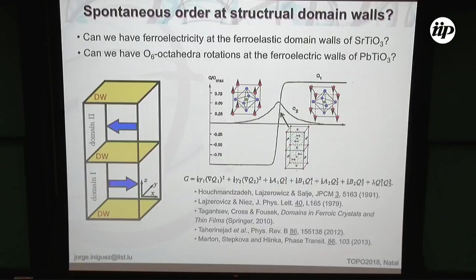The first thing I'm going to address is what happens with the domain walls in lead titanate. I am interested in a situation where I have a 180-degree domain wall, idealized so it's perfectly planar, in a bulk situation. Why domain walls? Because this has been a topic in the literature for many years.